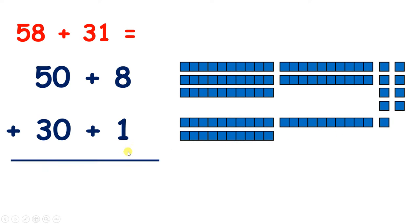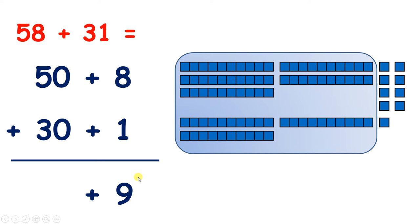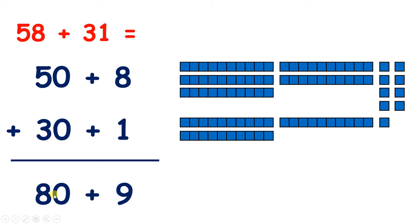So we're going to add our units and then add our tens. Looking at the units, we have 8 plus 1, which is 9. And now we're going to add our tens, so we have 5 tens plus 3 tens, or 50 plus 30, which is 8 tens, or 80. So now we have 80 plus 9, which gives us 89.